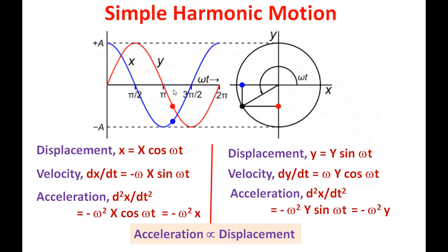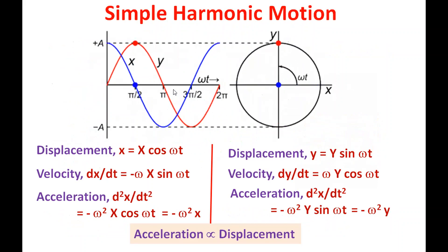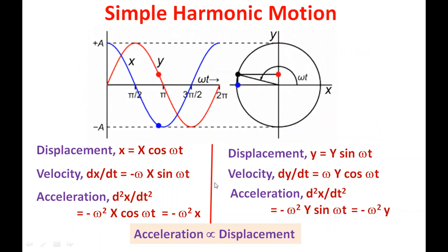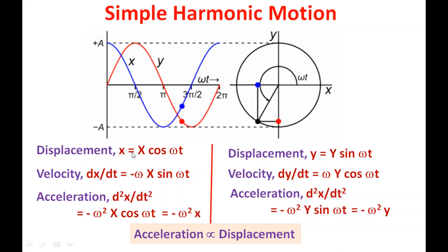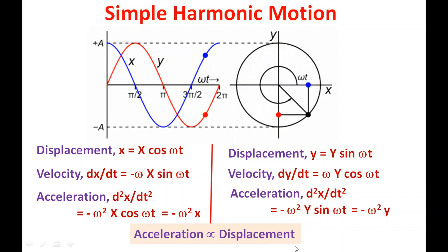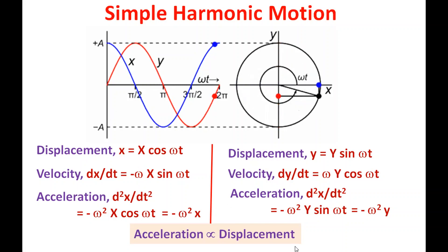Simple harmonic motion can be written either by using a sine function or cosine function based on the amplitude. The important property of simple harmonic motion is that acceleration is proportional to displacement. Using this property, we are going to convert the time domain governing differential equation into a frequency domain equation.